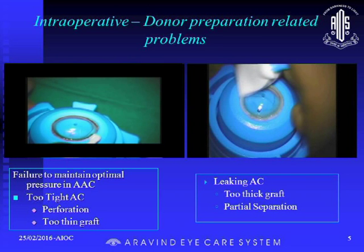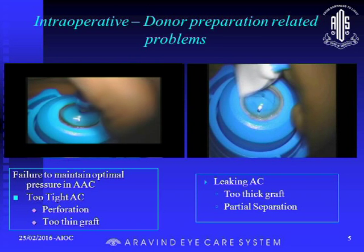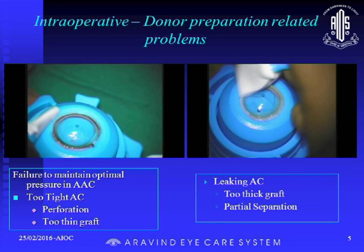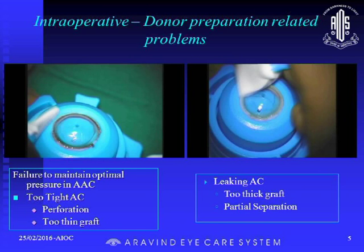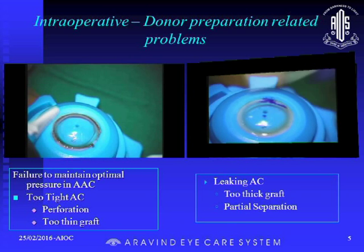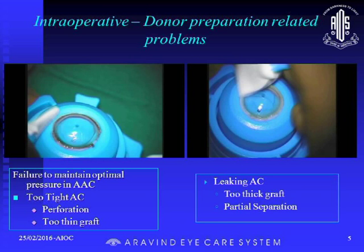The first complication is too thick or too thin a graft. This usually happens when you don't have proper tension in the anterior chamber. Before dissection, you have to check properly that it is at optimal tension. If it is too soft, you may end up with a thick graft, or if too thin, you may end up with a perforation. If there is any sign of leak, better to recheck your anterior chamber and even the button, then reform the anterior chamber again and go for dissection.